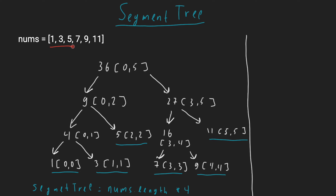Let's take this example and work on it. We are going to solve this problem using a segment tree. A segment tree is a binary tree where the root is the sum of all elements — in this case from index 0 to 5. The left subchild is the sum of elements from 0 to 2, and the right subchild is the sum of elements from 3 to 5.